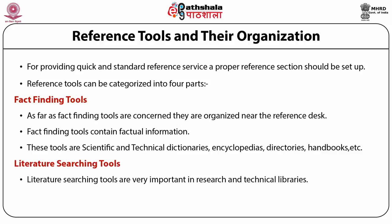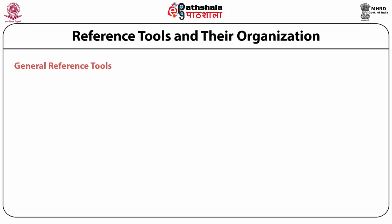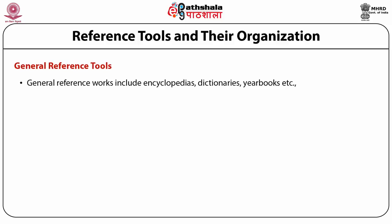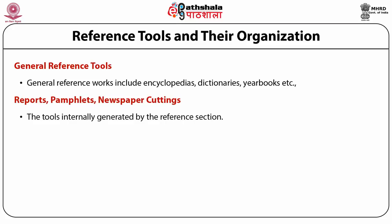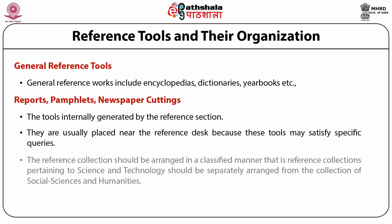Number three, general reference tools, which include general reference works such as encyclopedias, dictionaries, yearbooks, etc. Number four, reports, pamphlets, and newspaper cuttings — these are tools internally generated by the reference section and are usually placed near the reference desk because they may satisfy specific queries. The reference collection should be arranged in a classified manner; that is, the reference collections pertaining to science and technology should be separated from the collections of social sciences and humanities.